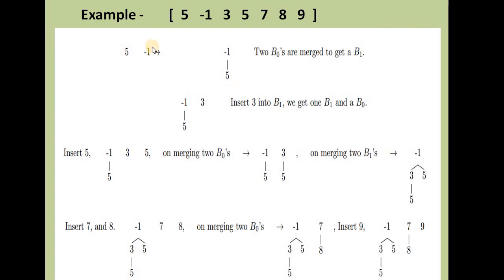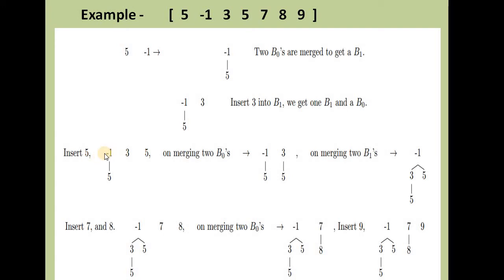Now let's see an example of constructing a binomial tree from the elements 5, minus 1, 3, 5, 7, 8, and 9. We pick 5 as a B0, then minus 1 as another B0. Combining these two B0s gives one B1, where the smaller element minus 1 becomes the root. The next element 3 becomes a new B0, giving us one B1 and one B0.